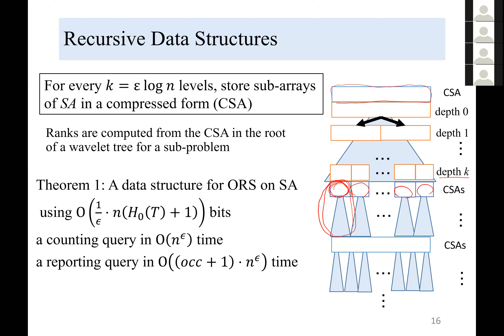From this recursive construction, we obtain the main theorem: the data structure size is O((1/epsilon)·n·(H_0 + 1)) bits, counting queries are done in O(n^epsilon) time, and reporting queries in O((occ + 1)·n^epsilon) time.